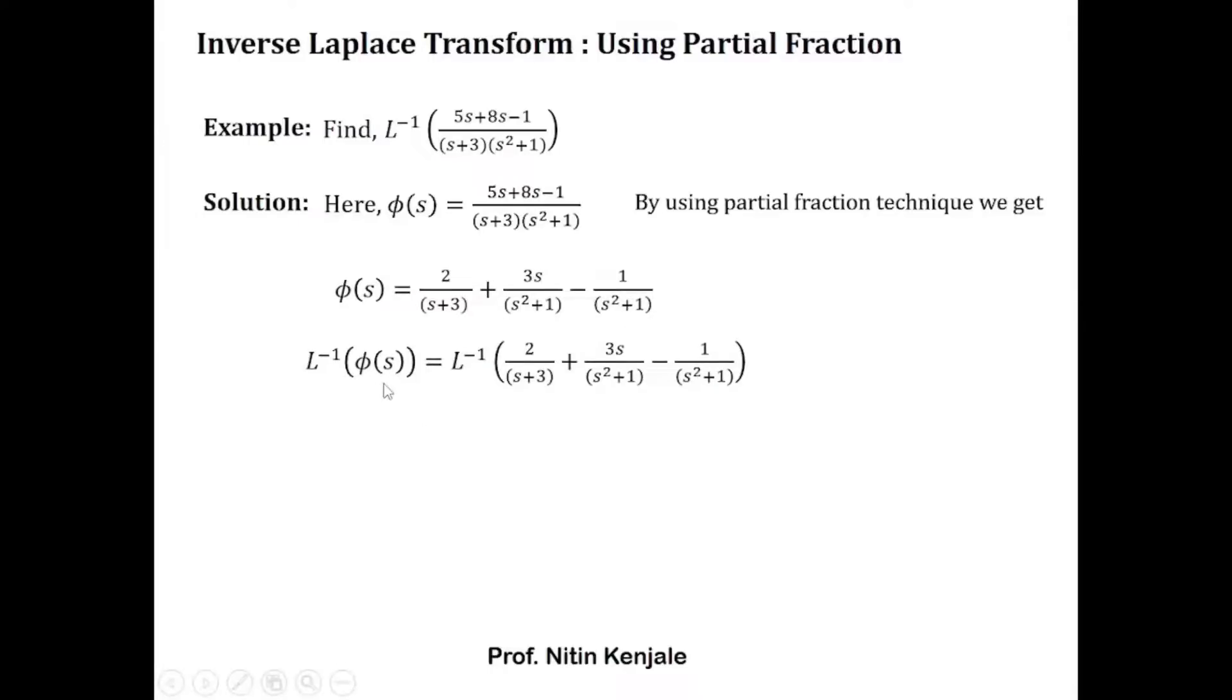So L^-1 of φ(s) is L^-1 of this right-hand side. Now we apply linearity property on the right-hand side, by which we have 2 times L^-1 of 1/(s+3) plus 3 times L^-1 of s/(s²+1) minus 1 times L^-1 of 1/(s²+1).